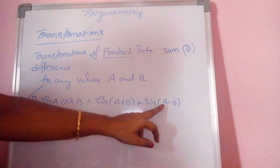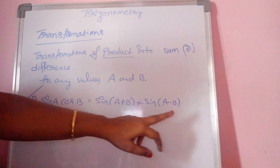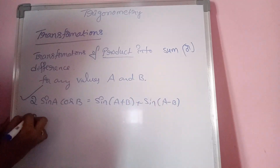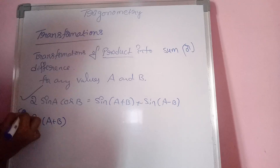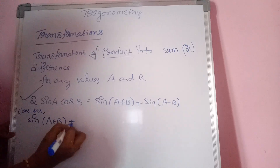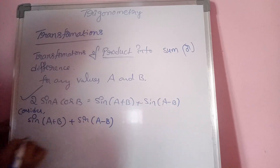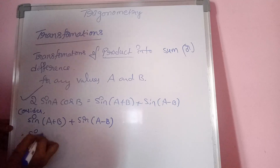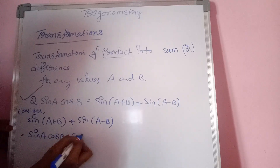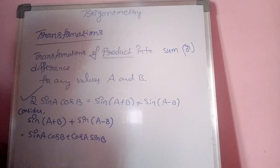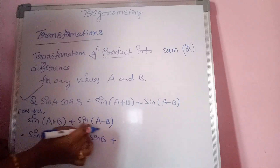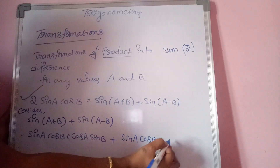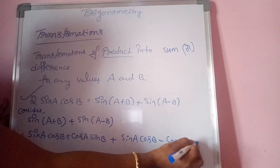Consider sin(A+B) plus sin(A−B). We know that sin(A+B) equals sin A cos B plus cos A sin B. And sin(A−B) equals sin A cos B minus cos A sin B.